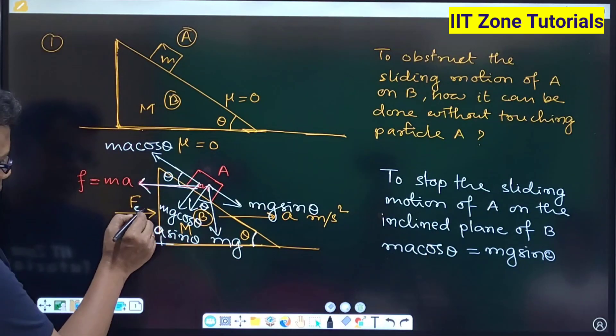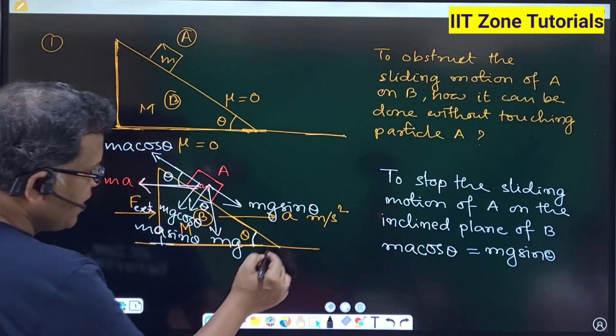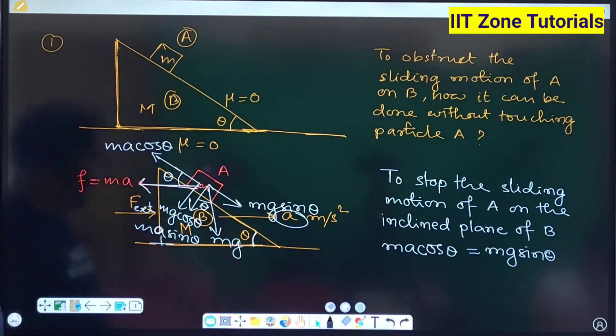You are applying some external force on capital M because of which this valid acceleration is achieved by capital M. So capital M being the first body gets acceleration. So capital M will be treated to be a non-inertial reference frame for small m.